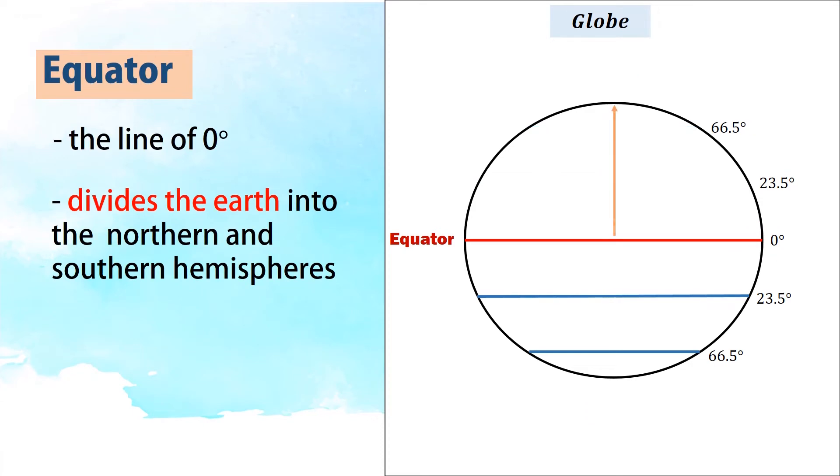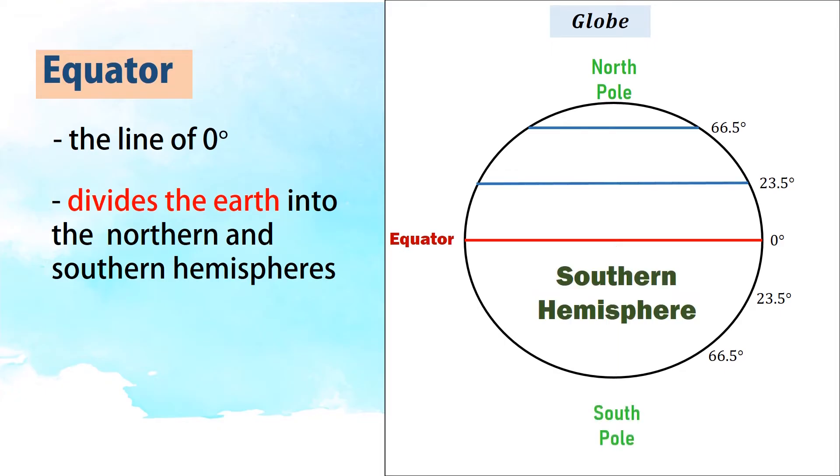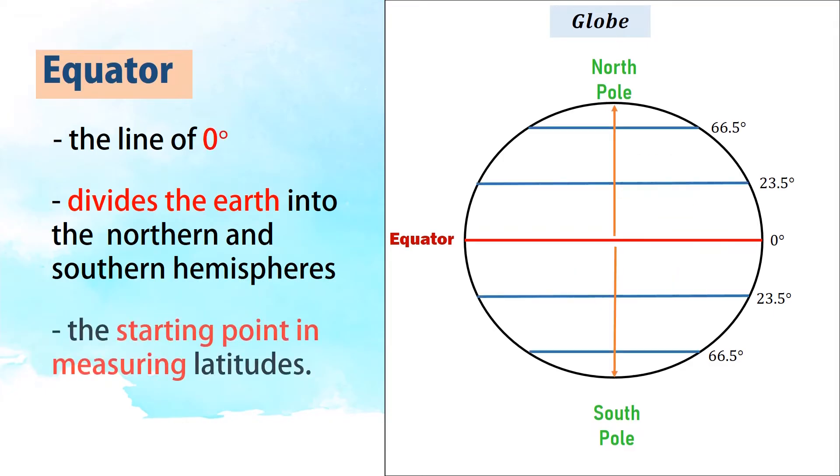Above the equator up to the north pole is the northern hemisphere, while below the equator down to the south pole is the southern hemisphere. The equator is the starting point in measuring the latitudes.